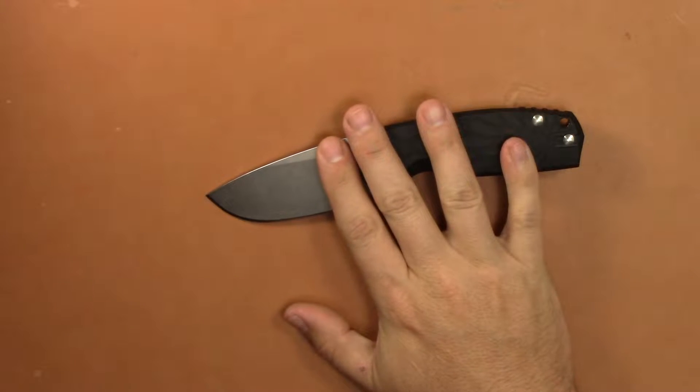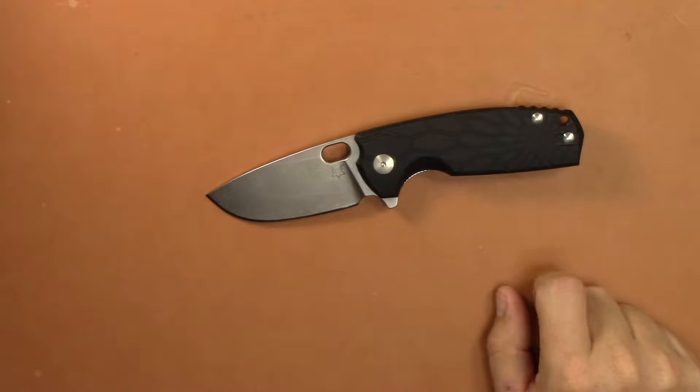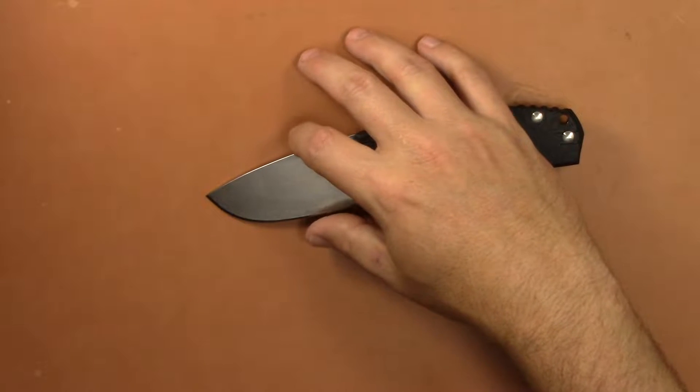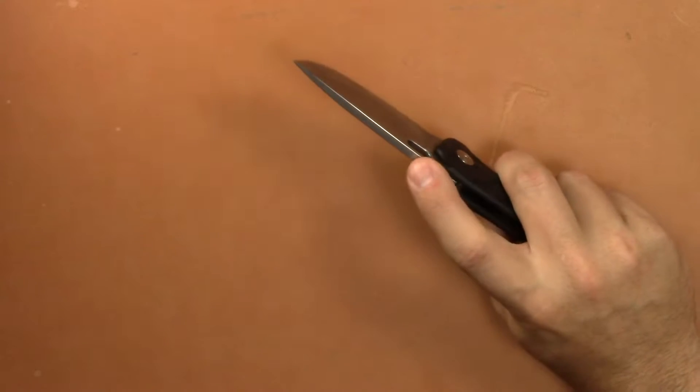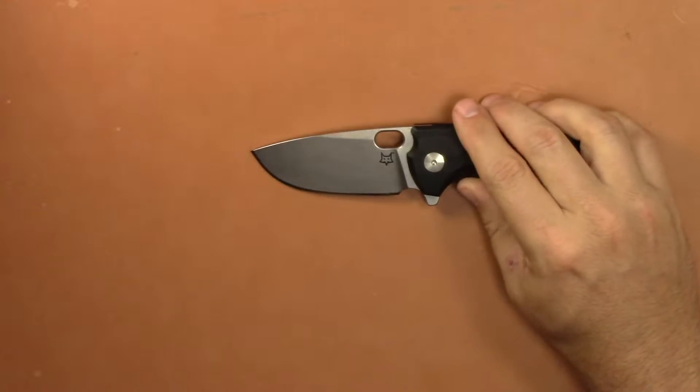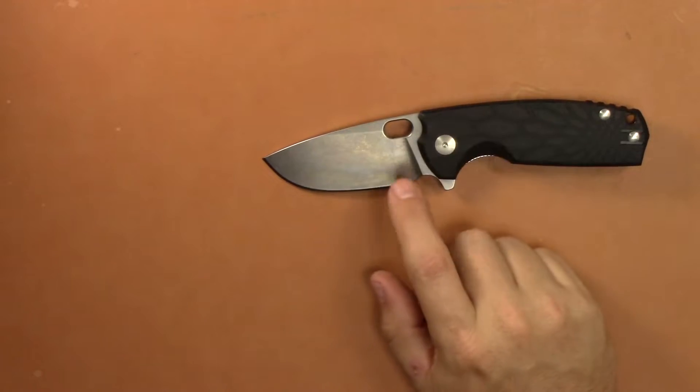Let's go ahead and talk about basic specs real quick, then I'll get into my impressions and thoughts. Your overall length is seven and a half inches, blade length of three inches, cutting edge of 2.8 inches, so that would be legal in quite a few places. Your width is 1.25 inches, pretty wide, blade thickness is 0.16.